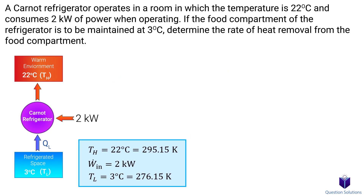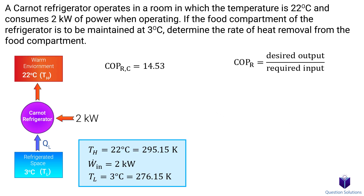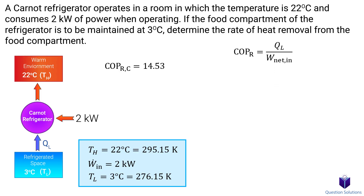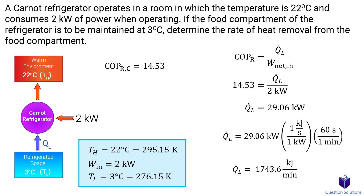The first step is to figure out the COP of this refrigerator. For that, we can use this equation. The little c represents a Carnot refrigerator. Let's plug our values in. Solving gives us the COP of this refrigerator. To figure out QL, we need to remember that COP is just the desired output divided by the required input. Here, our desired output is QL, and the required input is the power consumption. Let's write this in rate form and plug our values in. We can write this in kJ per minute by remembering that 1 kW is 1 kJ per second. So this tells us that 1743 kJ of heat is removed every minute from the food compartment of the refrigerator.